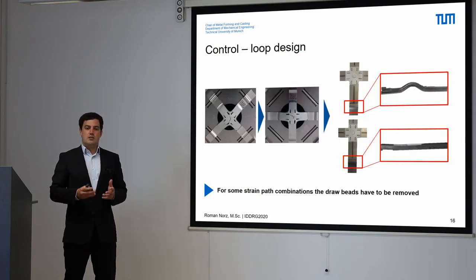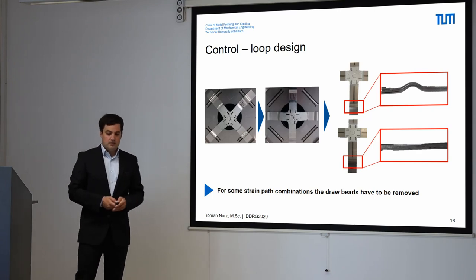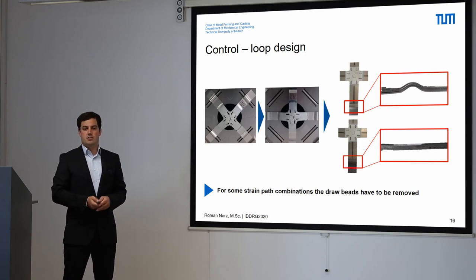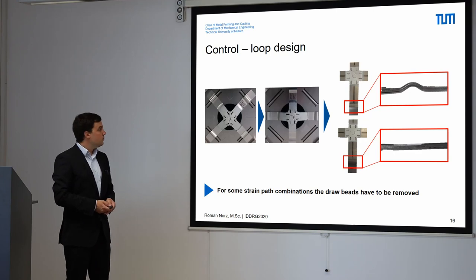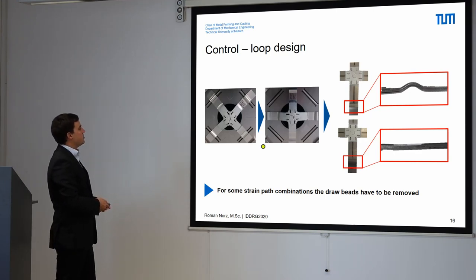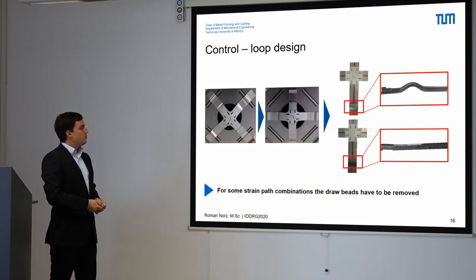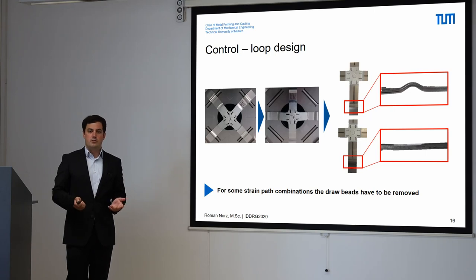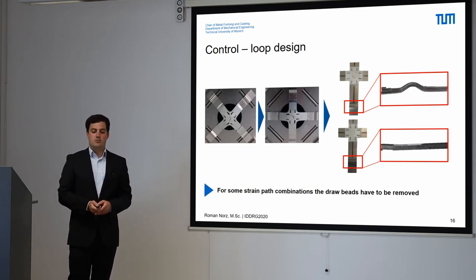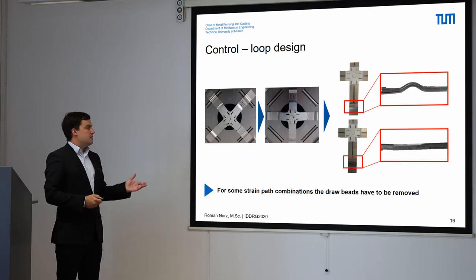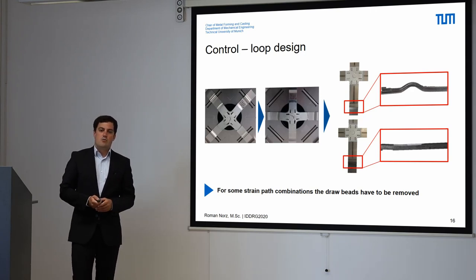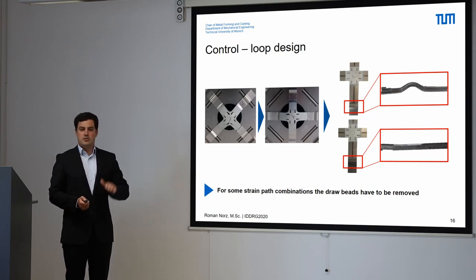A third effect is that for some strain path combinations the draw bead has to be removed or reduced. For example, if we have a plane strain forming step followed by a uniaxial forming step, we have to remove the draw beads. To remove the draw beads, we turn the cruciform specimen by 45 degrees and just clamp the specimen. By clamping the specimen we can see that the draw bead is removed and we are able to adapt the draw bead as needed. For the uniaxial strain path, for example, we do not create any draw bead at all.